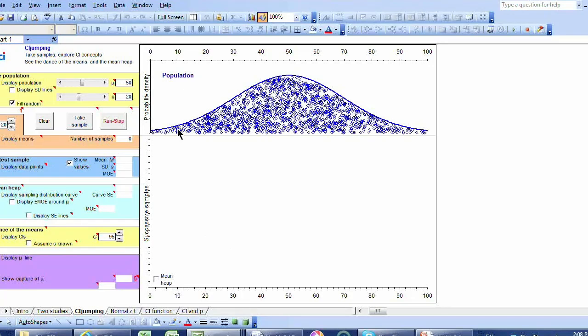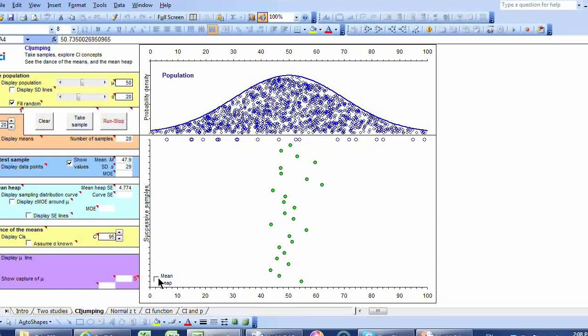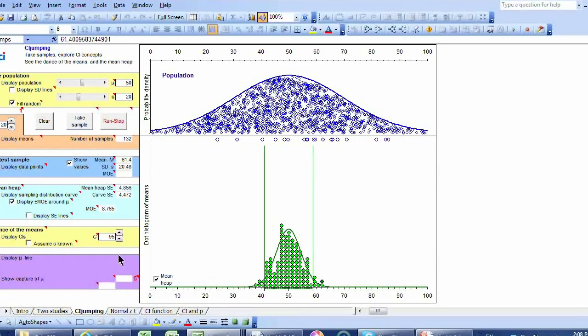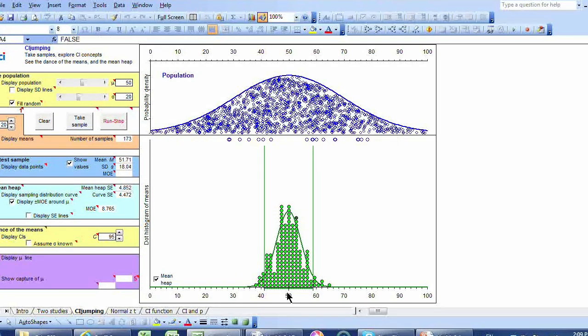Let's simulate this in ESCY. So here we are again with our population distribution of pain ratings. Population mean 50 and standard deviation 20. And I'm going to take a whole lot of samples of size 20 and pile them up into the sampling distribution. And I'm going to turn on that curve and I'm going to turn on the tram lines again showing MOE, about two standard errors, above and below the mean.